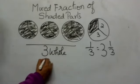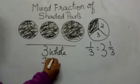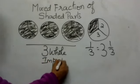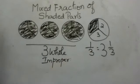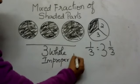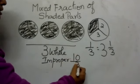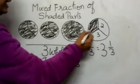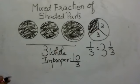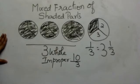And what will be the improper fraction? Three multiplied by three is nine, plus one is ten. So the improper fraction is ten by three. I think you have understood the improper fraction and how to create the mixed fraction from the shaded parts. I hope this concept is clear. If it is not clear, you can ask me in class. Thank you.